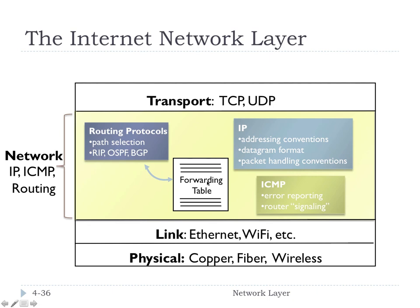As we look into the network layer, notice these three components. The network layer is more than just IP. IP handles addressing, the format of the datagram, and some packet handling conventions like how fragmentation occurs. Routing protocols like RIP, OSPF, and BGP — which we'll cover in sections 4.5 and 4.6 — figure out the global routes and help create the forwarding table used inside each router to make local decisions.